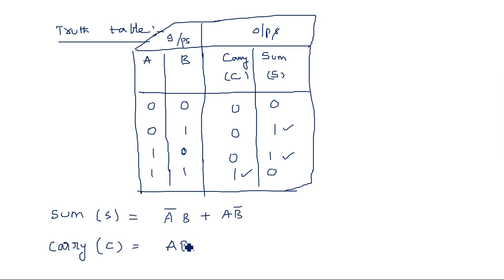This is a simple way — by looking at the table we can write the expression. But we can also use a K-map to simplify. As there are only four values, we can write directly from the table. But if we have more values, like for a full adder, we cannot do this directly — we must use K-map simplification.